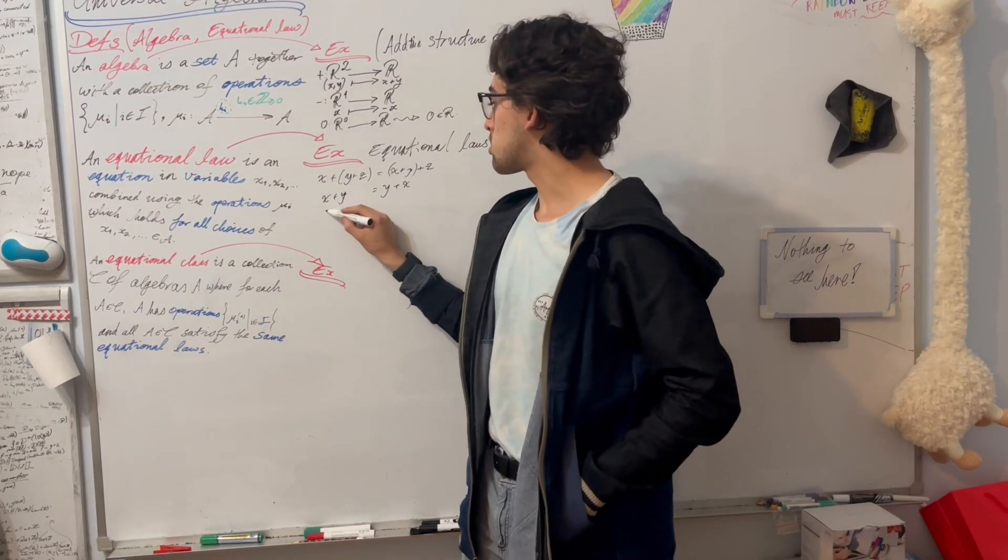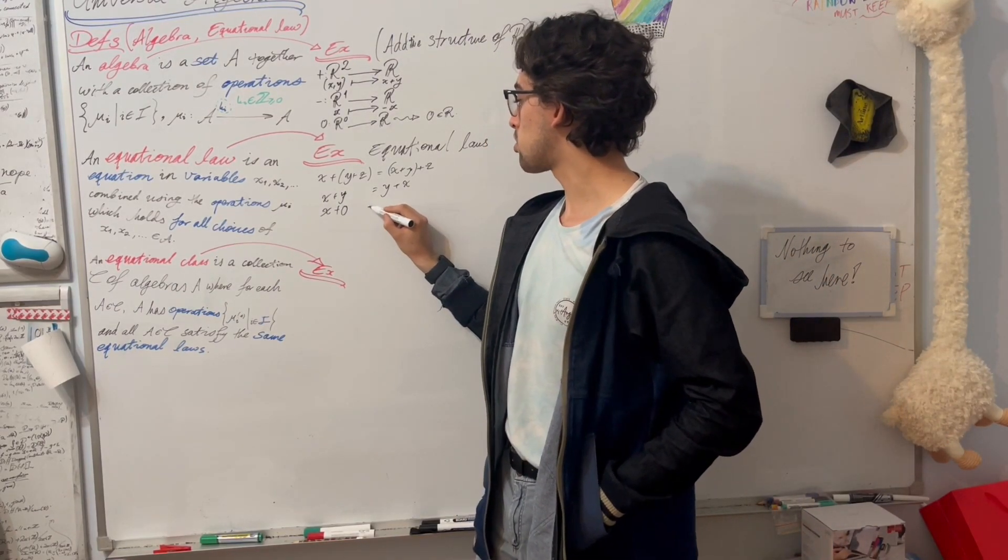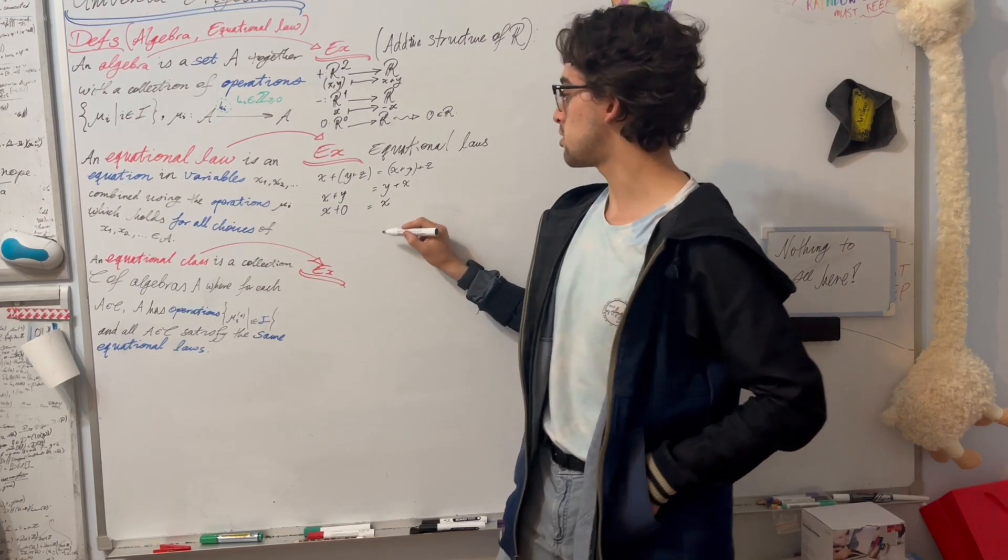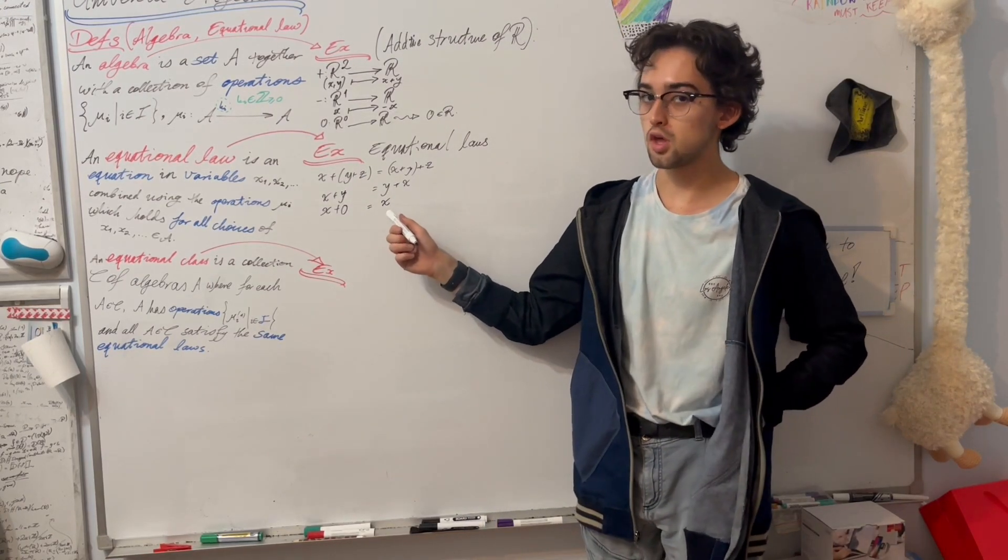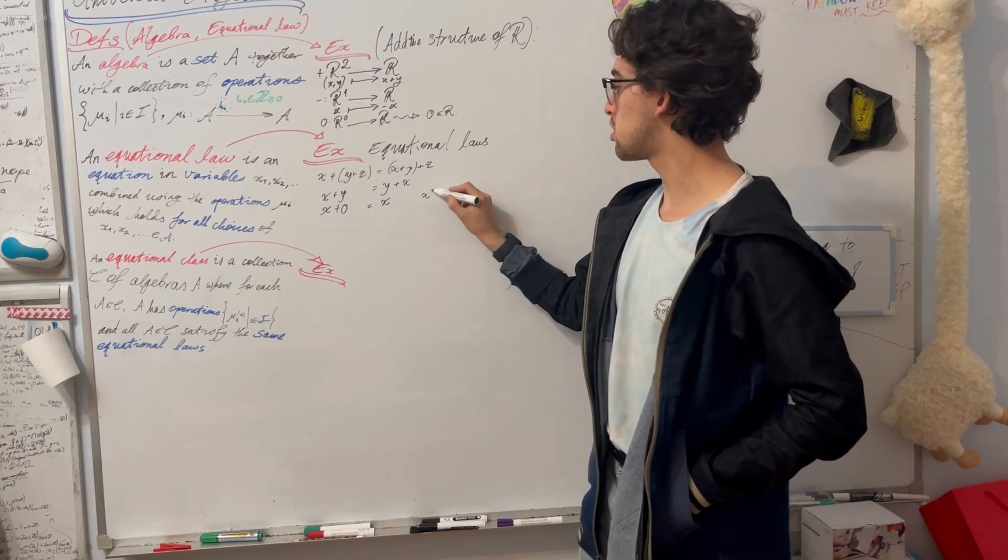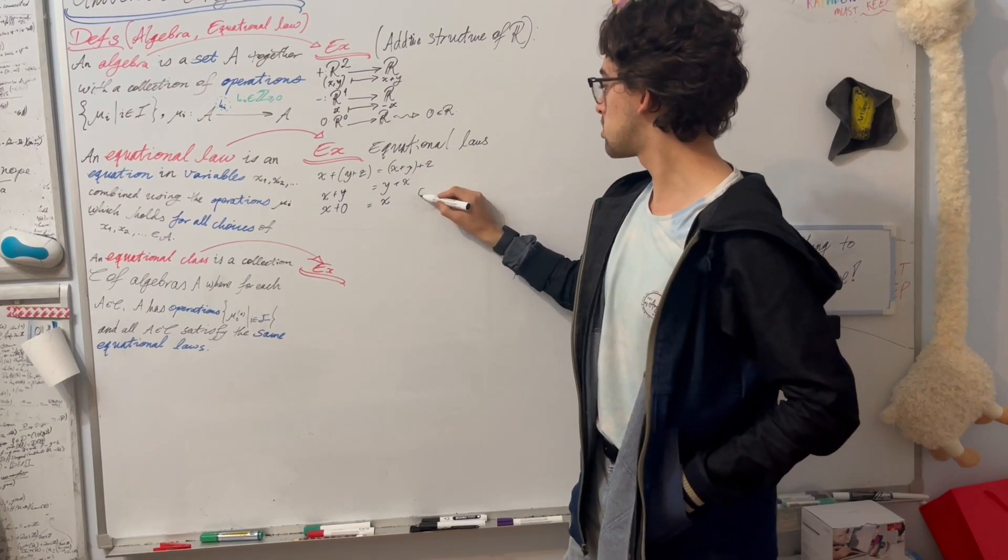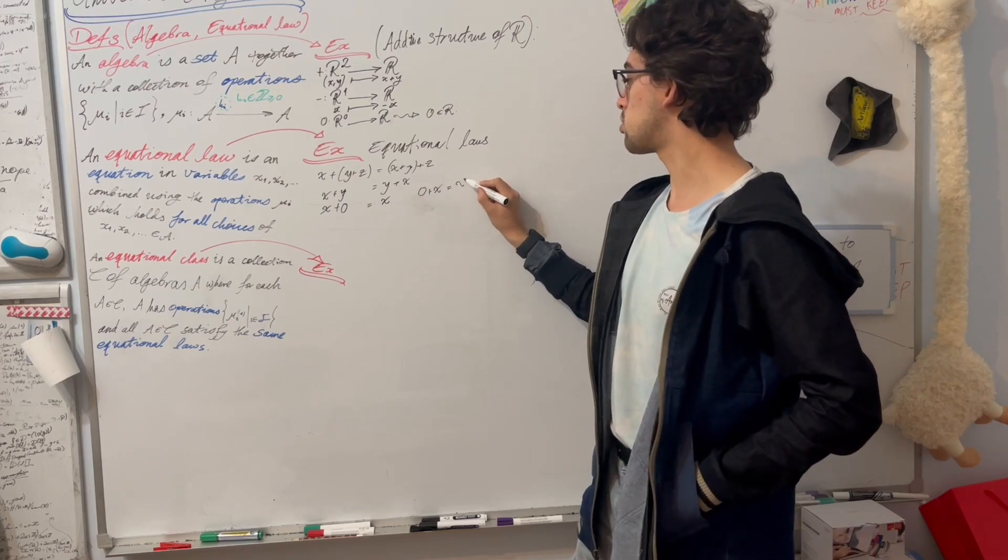We also have the fact that 0 acts as an additive identity, so that x plus 0 is x, and also 0 plus x is equal to x.